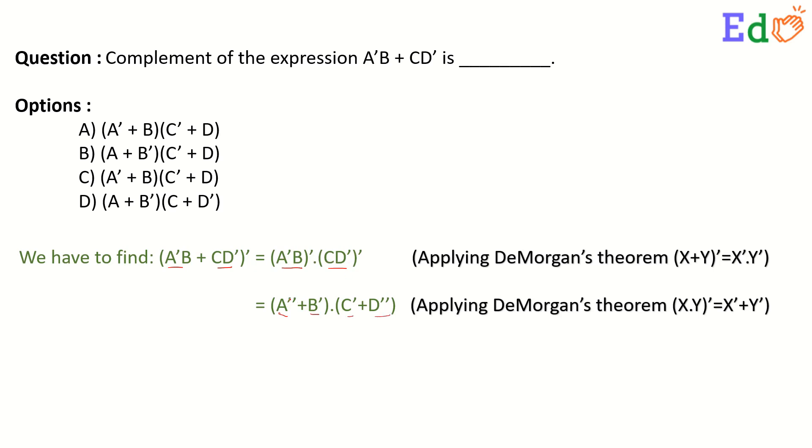The double complementation cancels each other out and we have only A remaining. So, A plus B complement is the first dot, and then dot C complement plus D.